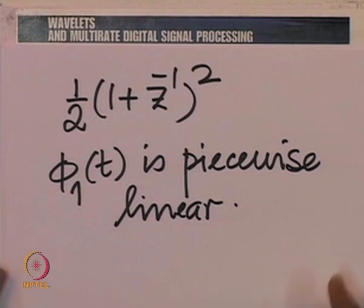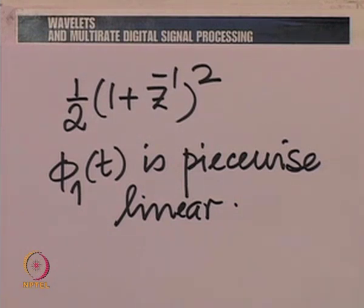An important observation is that as we convolve phi_0(t) with itself repeatedly, we seem to get piecewise polynomials of higher and higher degree. This notion of piecewise polynomial of increasing degree is what is captured in the word spline. Let me put down a reasonably clear definition of the word spline.